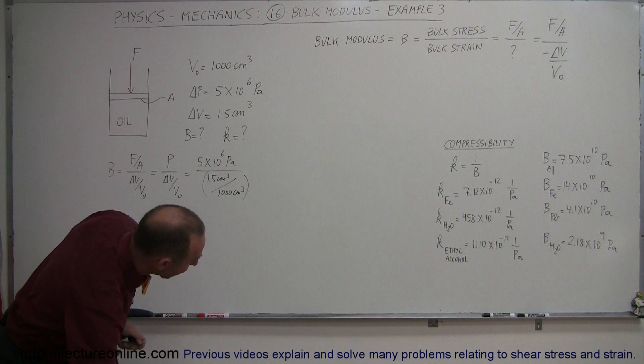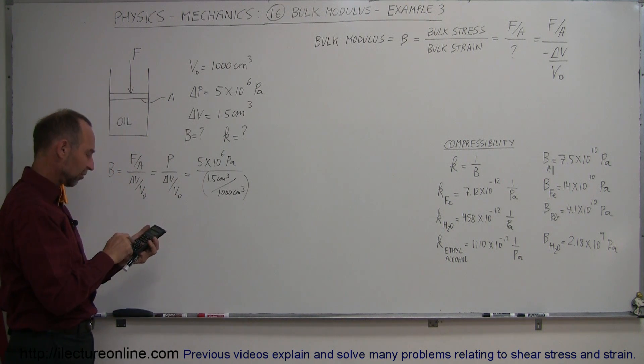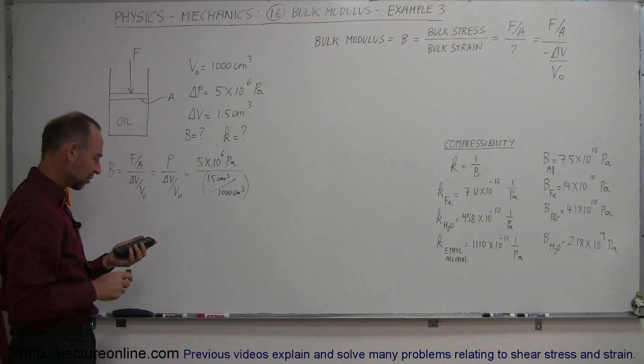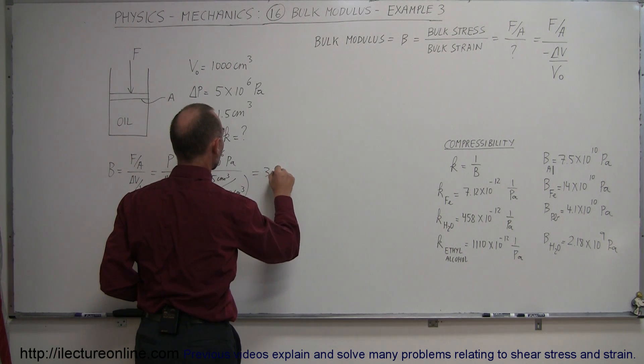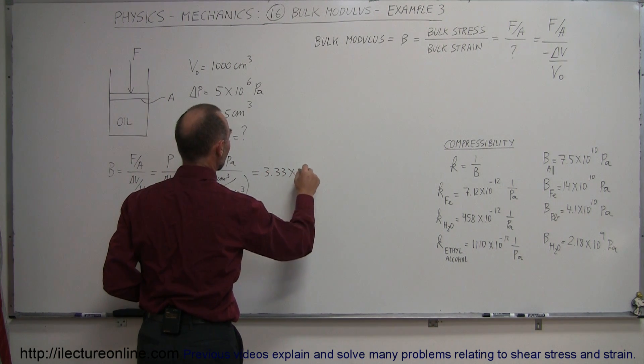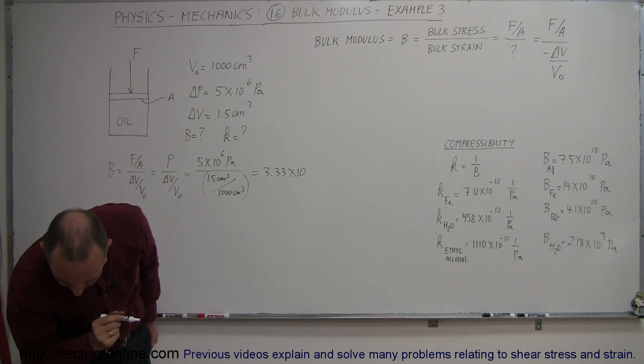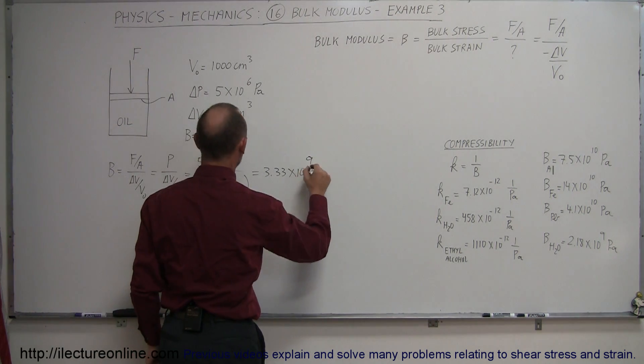So if we go ahead and use the calculator, that gives us 5e6 times 1,000 divided by 1.5. That gives us a bulk modulus of 3.33 times 10 to the 9, and of course, what are the units?